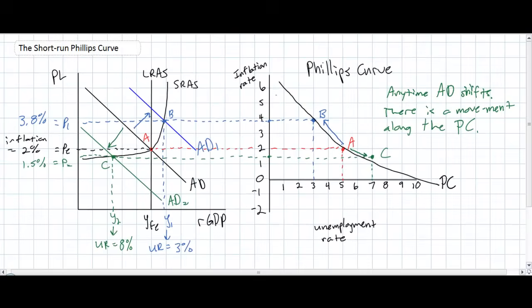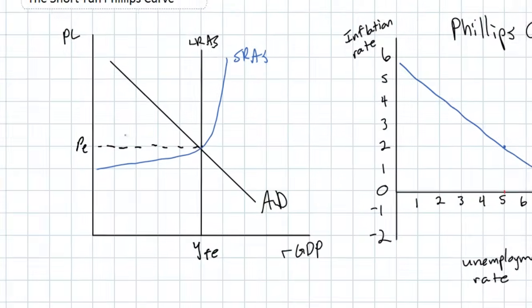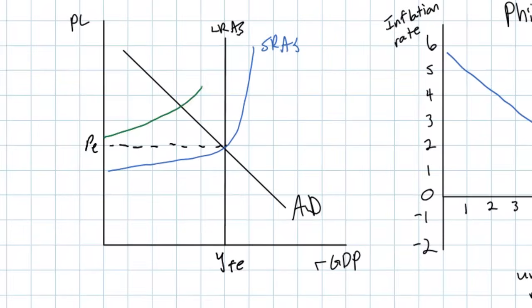Now let's look at what happens when aggregate supply shifts instead of aggregate demand, and how that affects the Phillips curve. Here we have a fresh Phillips curve model and a fresh ADAS model in which the economy is again producing at its full employment level with a stable price level of P.E. Anything that changes the average costs of production for the nation's producers will have an effect on aggregate supply — for example, a negative supply shock causing energy costs or transportation costs to rise will shift the SRAS curve to the left, to SRAS1.